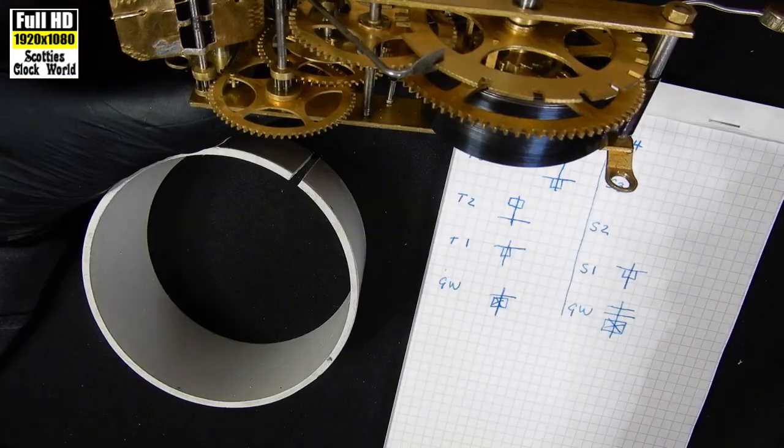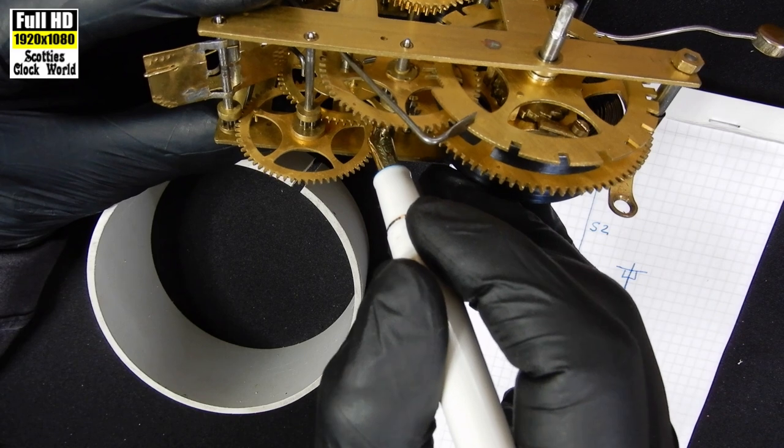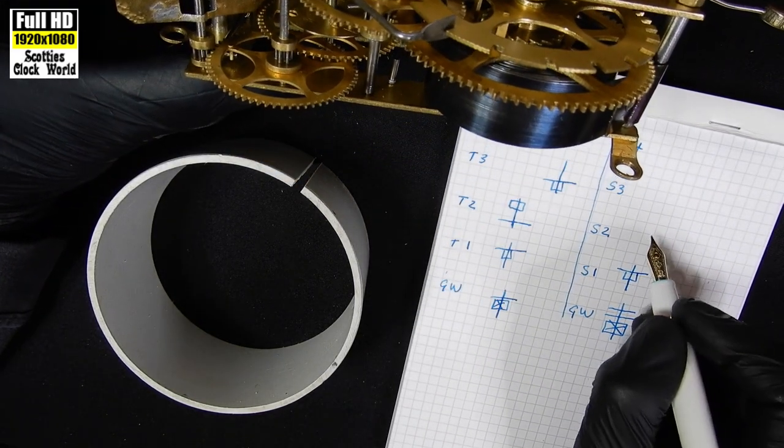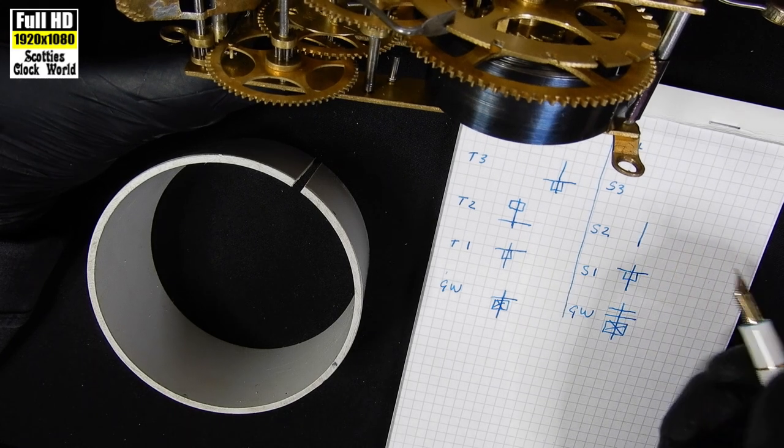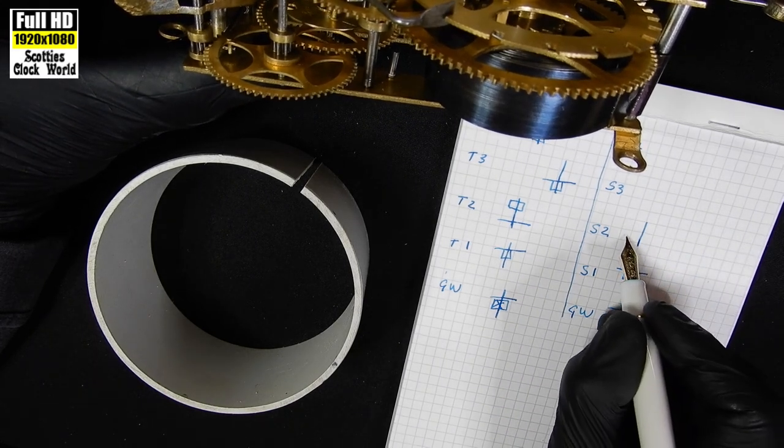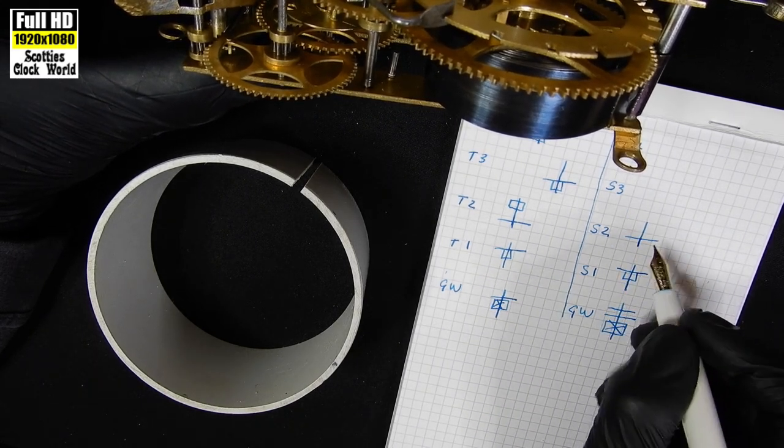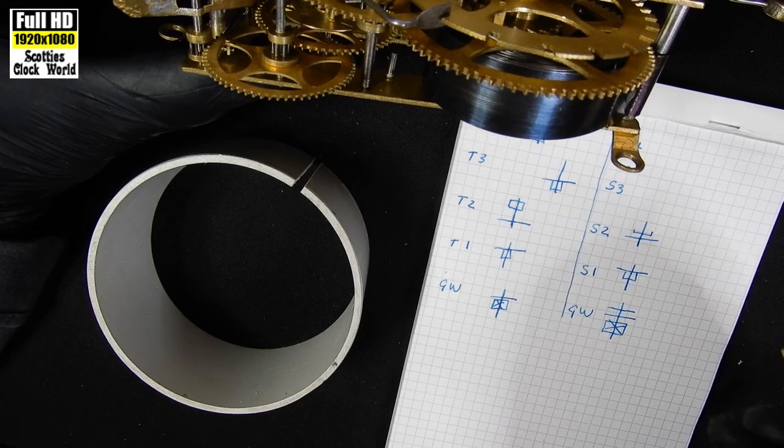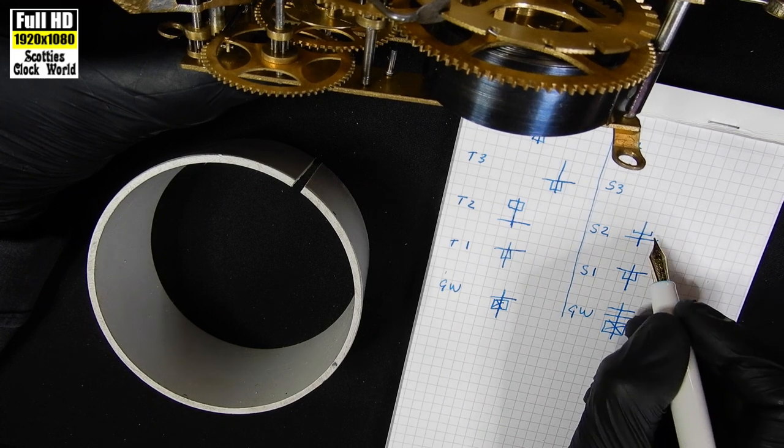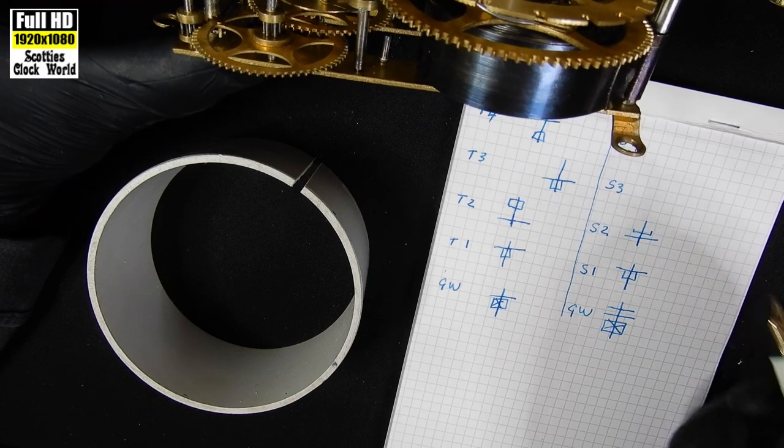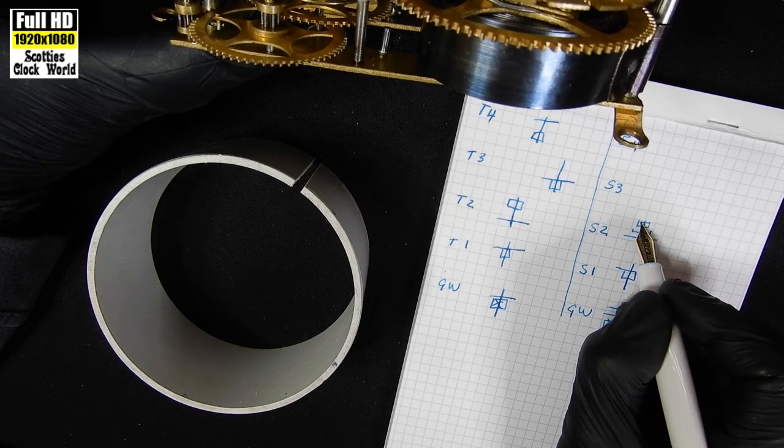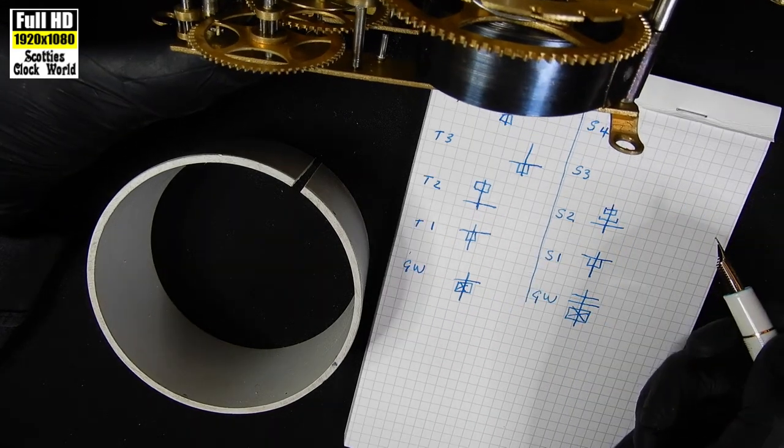Now the second wheel, which is that one there. We've got an arbor. We've got our wheel down here. That's part of the maintenance cam there. Those two pins work the hammer for the gong. And then up at the top we've got our pinion.